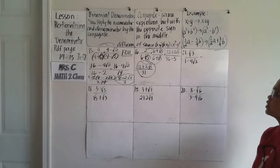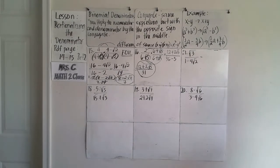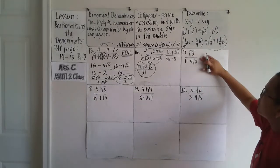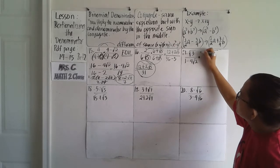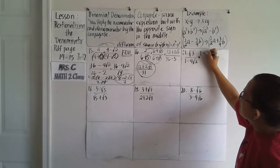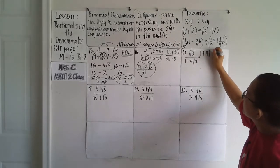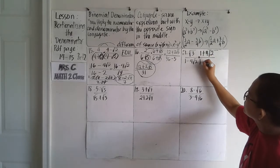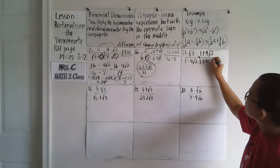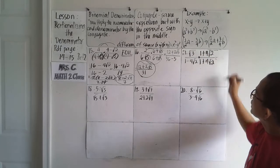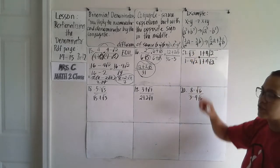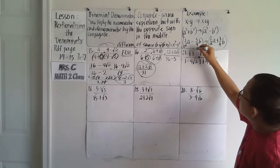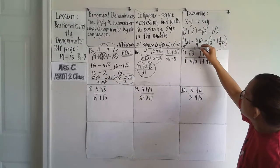Number 17: square root of three over one minus four square root of two. The conjugate of one minus four square root of two is one plus four square root of two. We'll multiply numerator and denominator by this conjugate, giving us a binomial times a monomial in the numerator — distribute one term at a time.